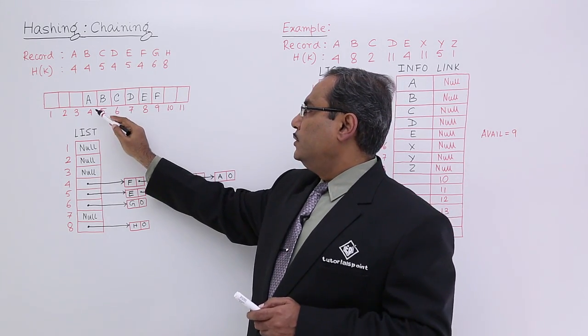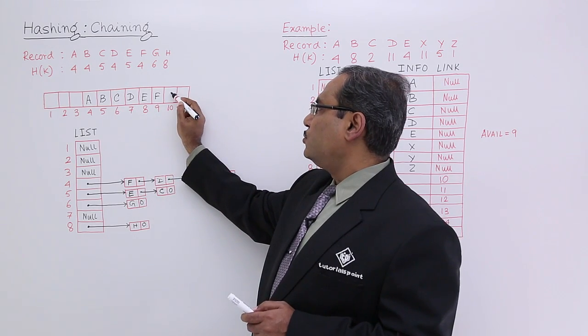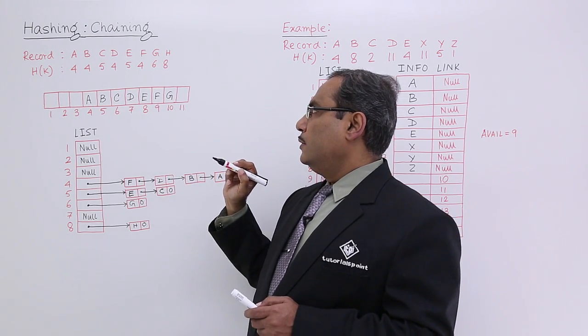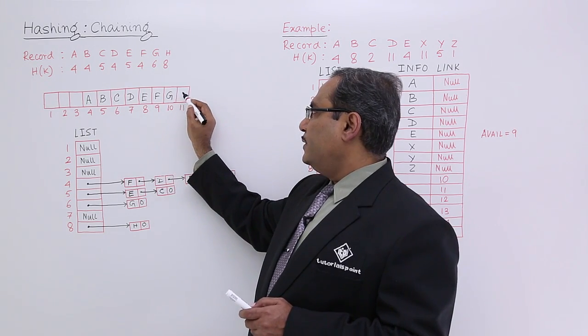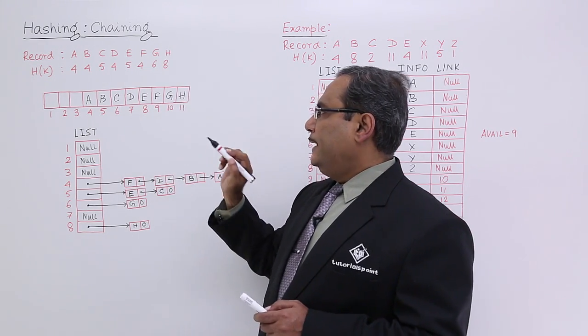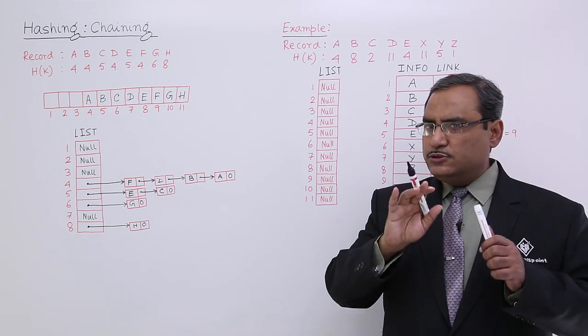Now we are going for G. So G is pointing towards sixth location, occupied. So G will be stored here. Now I shall go for H, eighth location, occupied. So H will be stored here. In this way, the values have got stored.